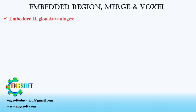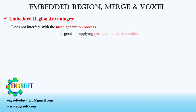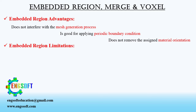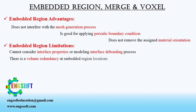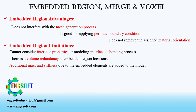The embedded region technique has the following advantages: it does not interfere with the mesh generation process, is good for applying periodic boundary conditions, and does not remove the assigned material orientation. However, it has the following limitations: it cannot consider interface properties or model the interface debonding process. There is volume redundancy at embedded region locations, so additional mass and stiffness due to the embedded elements are added to the model.